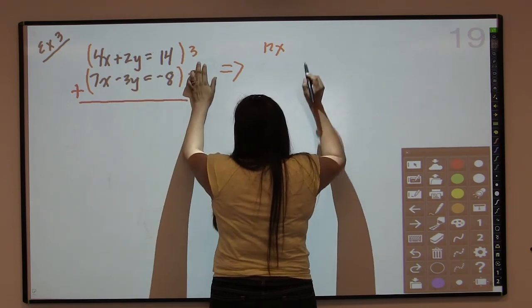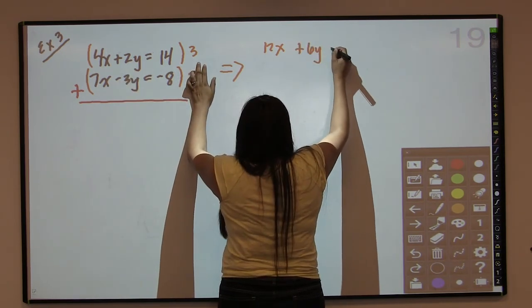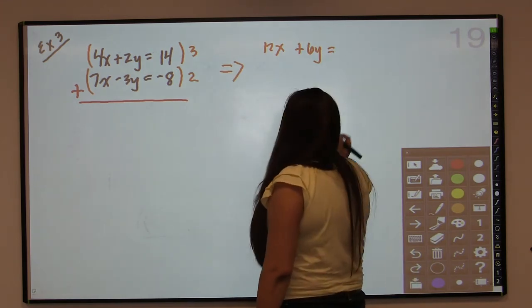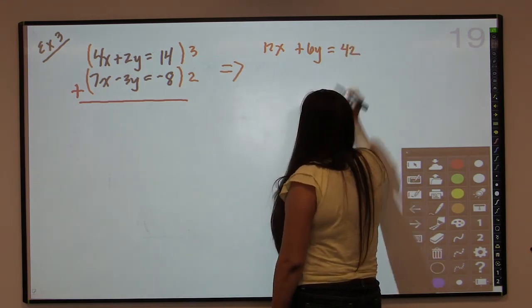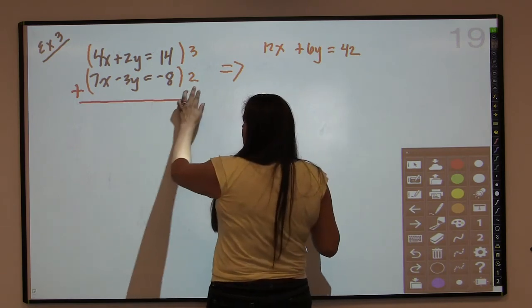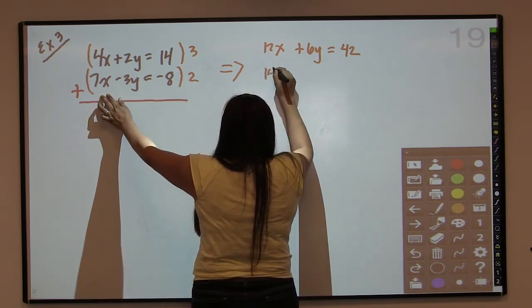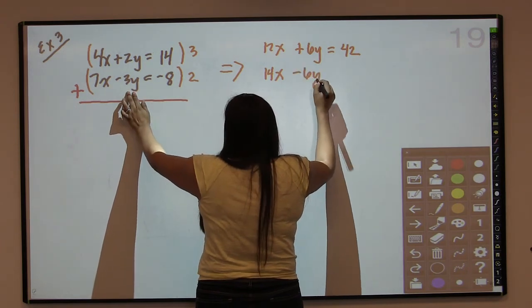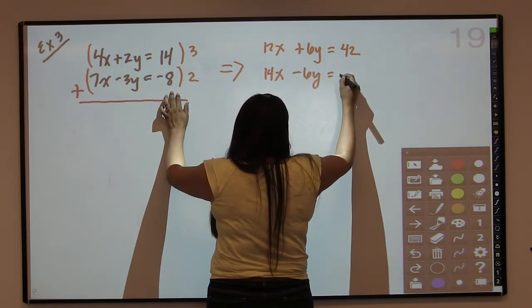2y times 3 is going to give me positive 6y. And then 14 times 3 is going to be 42. And at the bottom here, we are going to have 2 times 7x is going to give us 14x. This is going to give us negative 6y. And then negative 8 times 2 is negative 16.